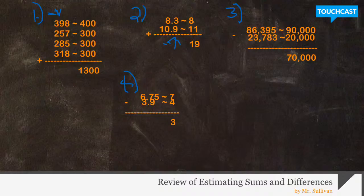In the next two examples, it works the same with estimating and subtraction. We have 86,395. In this case, we're going to round to the nearest 10,000. 86,395 rounds to 90,000 and 23,783 rounds to 20,000.